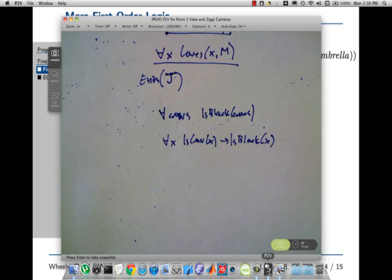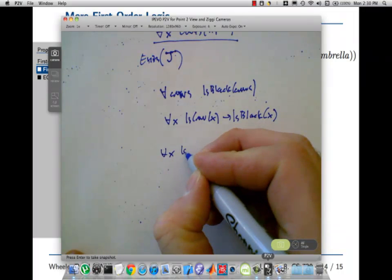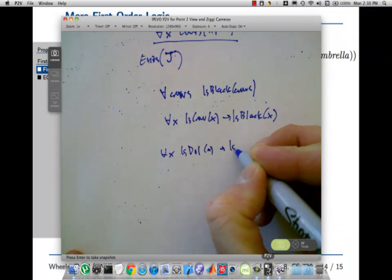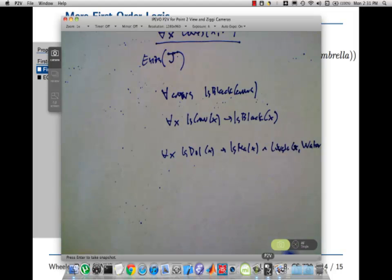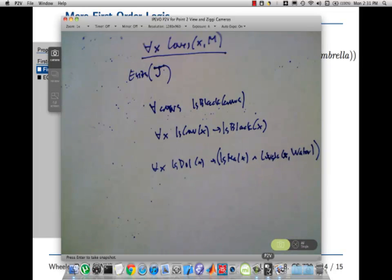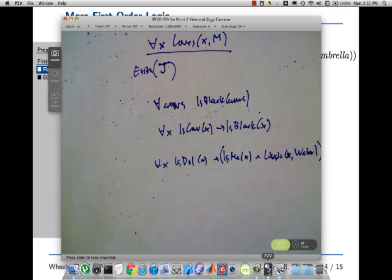I understand this. Good. One more. What's the next one? Dylan. For all x, is dolphin x implies is mammal x lives in x water. Lives in x water, where water is some constant. You might want to put parens around that. Dolphins are mammals that live in the water. Looks good to me.